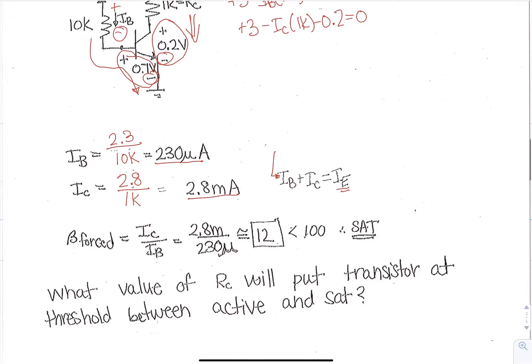So now we're going to take these values for the IB and IC and plug them in, so we have 2.8 milli for IC and 230 micro, and that gives a value of 12 which is a lot less than the hundred, and so therefore we are in saturation.